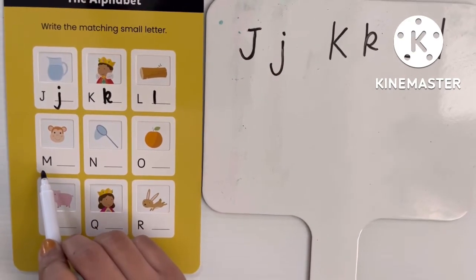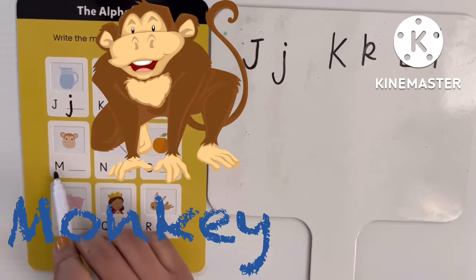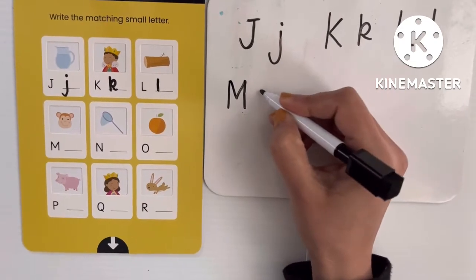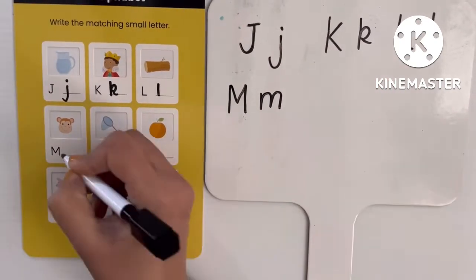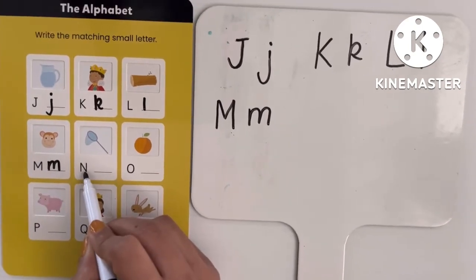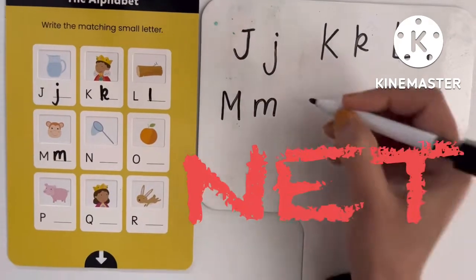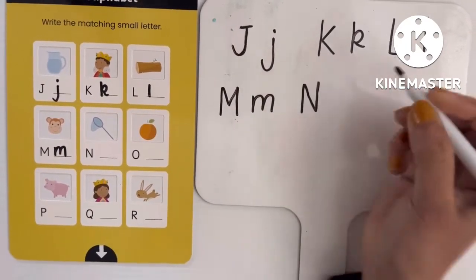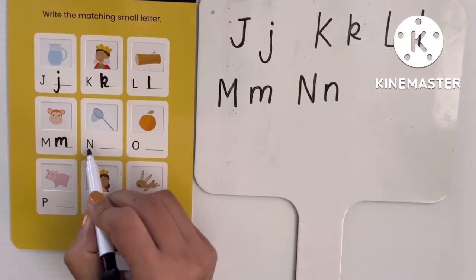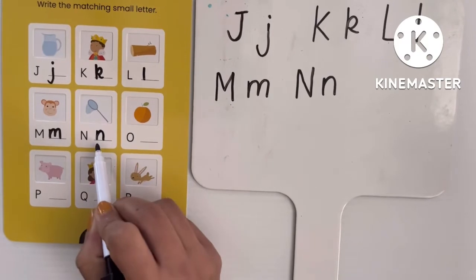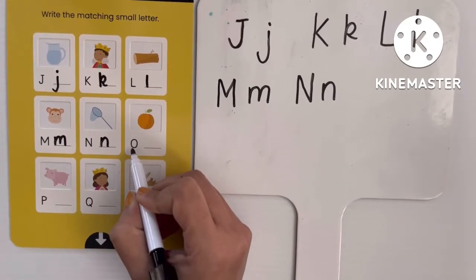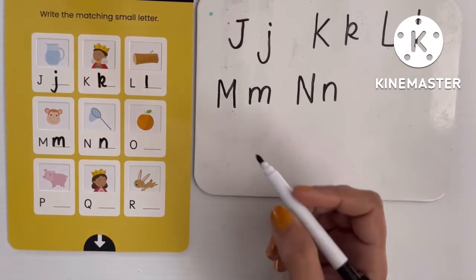Next letter is M — M means monkey. This one is uppercase M. In lowercase we write: m. So M in uppercase and m in lowercase. Next, N — N is for net. In uppercase we write N like this, and in lowercase like this. Their meaning is the same; they're just written differently. When we start any sentence, keep that in mind — we start it with the uppercase.